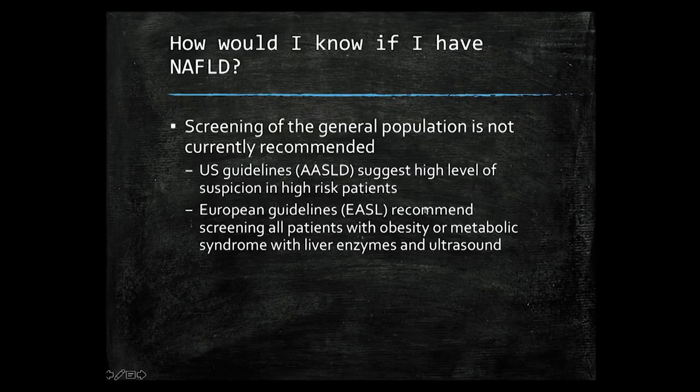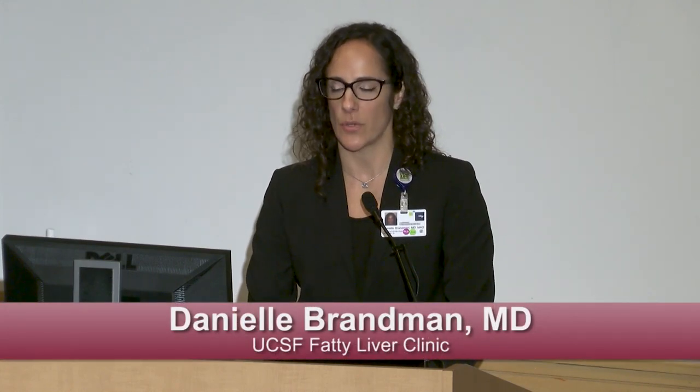The European guidelines — from the European Association for the Study of the Liver — are a little more prescriptive. They say you should screen all patients with obesity or metabolic syndrome by checking liver enzymes and ultrasound. I think this is a bit overkill. We really should be focusing on our highest-risk patients, which tend to be patients with diabetes, as they are most likely to have advanced liver disease in the setting of fatty liver. It's premature to say we should screen everybody who is obese or has metabolic syndrome problems such as high blood pressure or high cholesterol, but again, that may change.